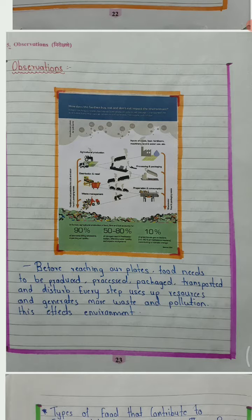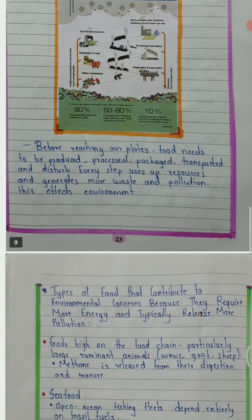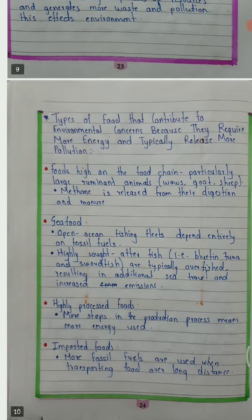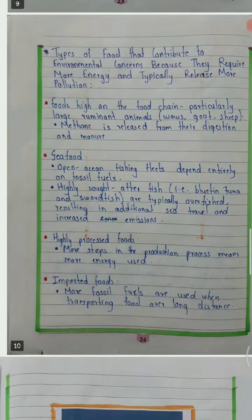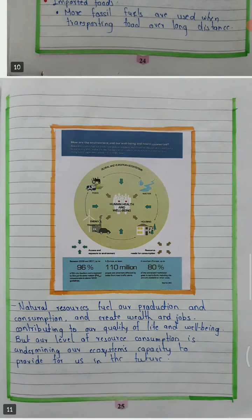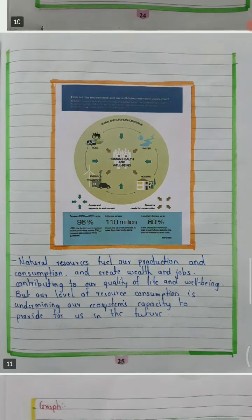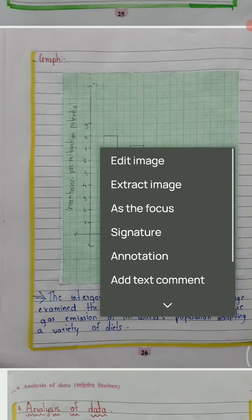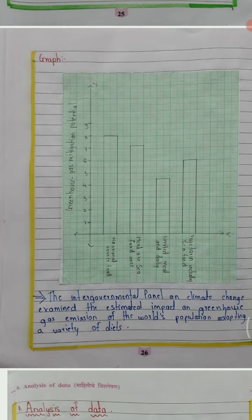In the observations, different types of foods are given — imported food, junk food, seafood. Related to each and every type of food, the observations describe how it affects the environment. You can see an analysis is done regarding it.